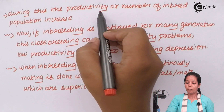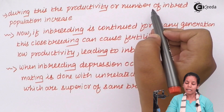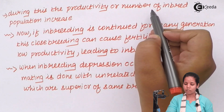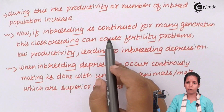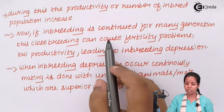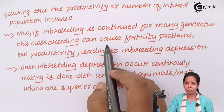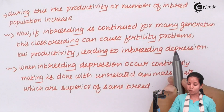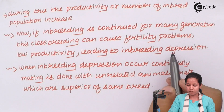Increase in productivity or the number of breed increases during the breeding process. However, inbreeding for continuous generations can lead to fertility problems or low productivity, which may be called inbreeding depression.